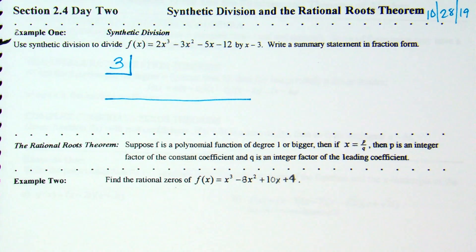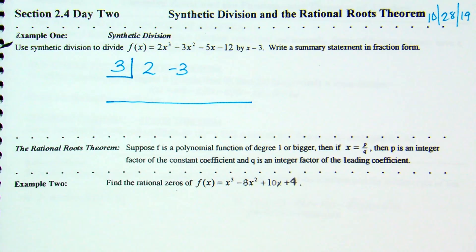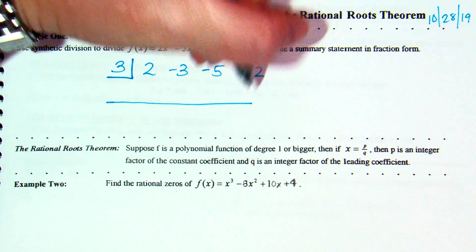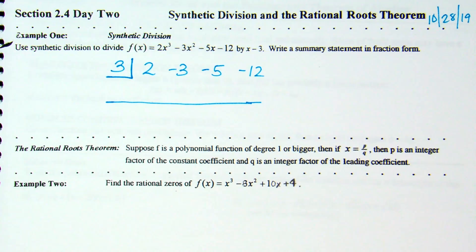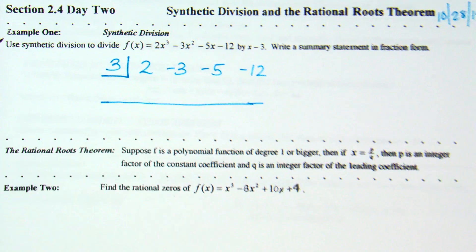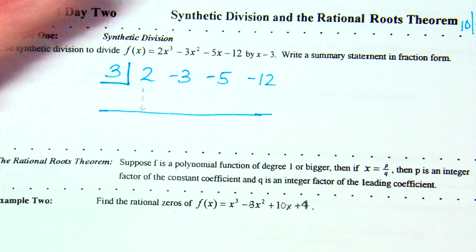In order, highest power to lowest power. My first coefficient is 2 — that's on the x cubed term. Next, I need the x squared term, which is negative 3. After x squared I need the x term, which is negative 5. And then I need my constant term, which is negative 12. First thing we do: we drop the 2. That 2 automatically always carries down to our answer.